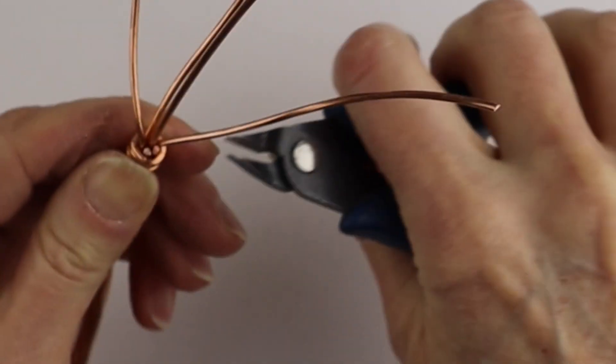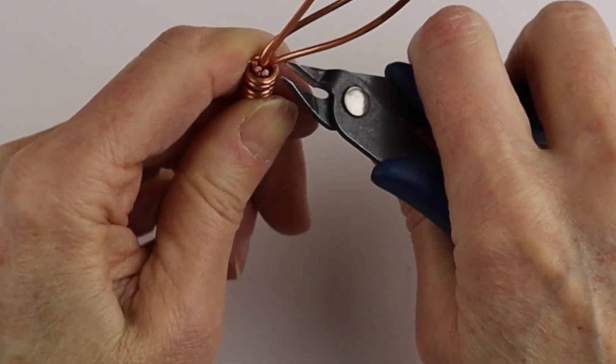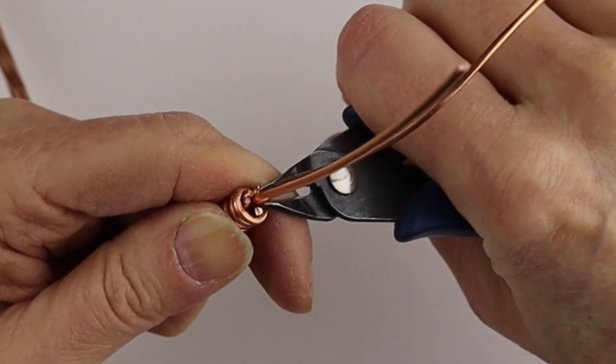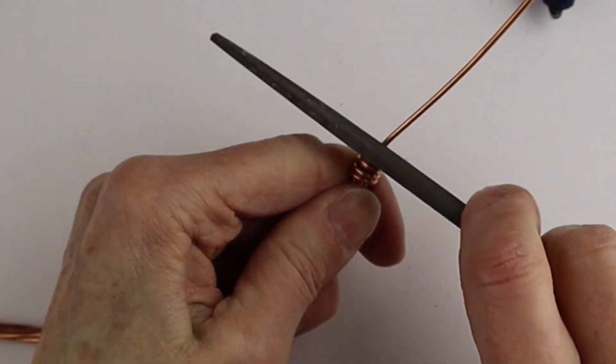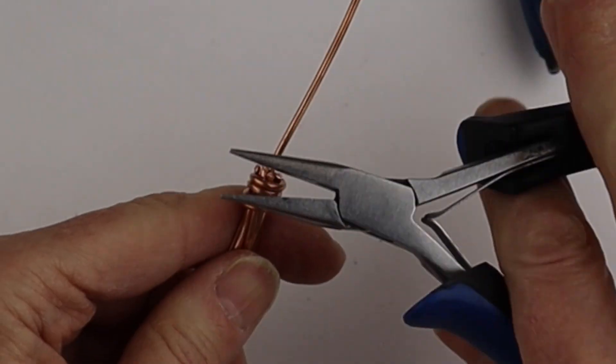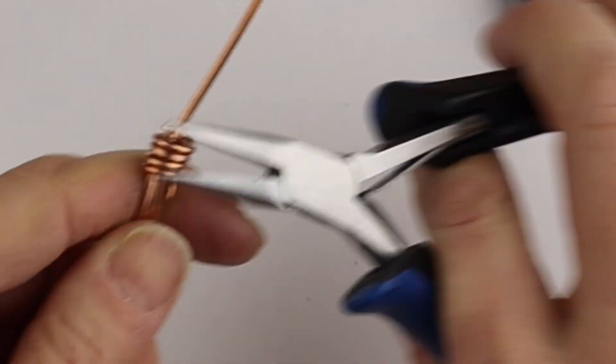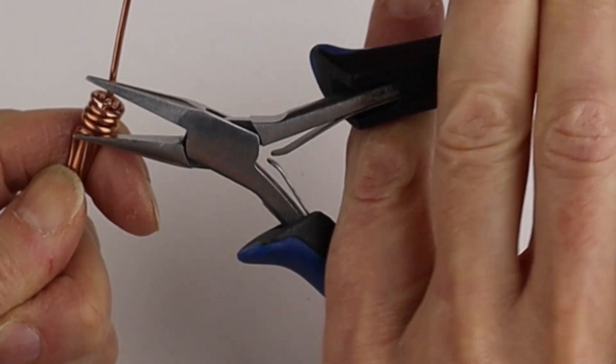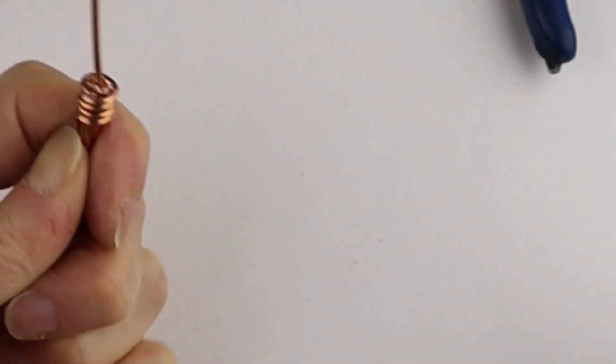Sometimes it helps to give it a nip and then bend it back and forth. We just want to get all these little ends cut. If you have sharp ends there you can file them, or you can just use your pliers to push the ends and they magically go inside the coil. Just work your way around and the ends will kind of disappear in that coil.